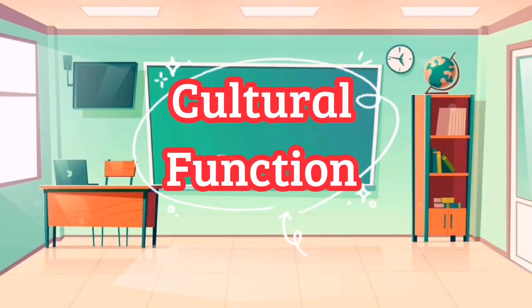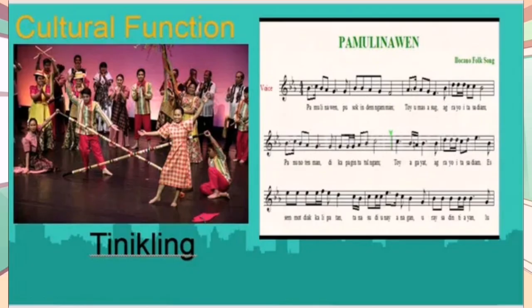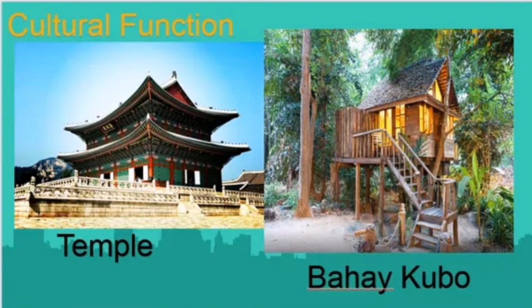Let's now go to cultural function. Buildings, furniture like chairs and tables, clothes, and the like form part of the country's material culture, while music, dance, and language incorporated in oral and written literature and drama form part of its non-material culture. Therefore, paintings, sculpture, architectural works, songs, dances, drama, and literary pieces are embodiments of a nation's culture. Examples of cultural function include the Tinikling and the Ilocano song Pamulinawin in non-material culture, as well as the Bahay Kubo that embodies Filipino culture, and temples typically used in Japan, Korea, or China.